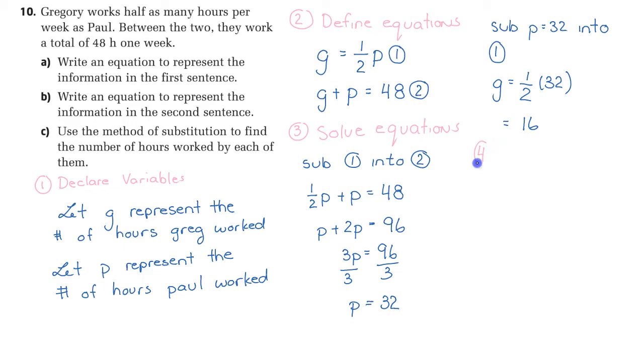Our next step is to check. We check by substituting our two values into our original equations. You don't have to do both. You can if you want. We're going to sub G equals 16 and P equals 32 into equation 2. Therefore, 16 plus 32 equals 48 and we do what's called the left side, right side check here. We're going to simplify both sides and see that they're the same. 32 plus 16 is in fact 48. I feel good about this answer. I'm going to give myself a check.